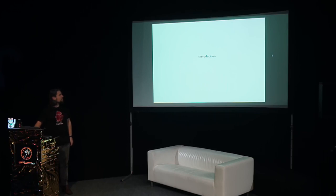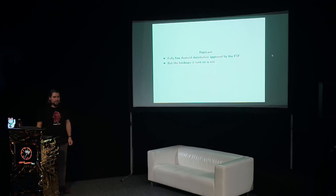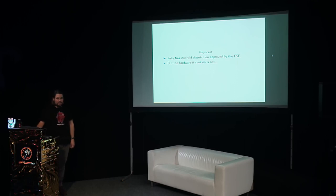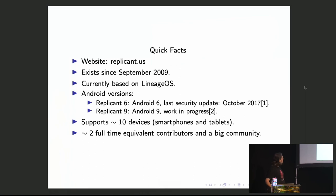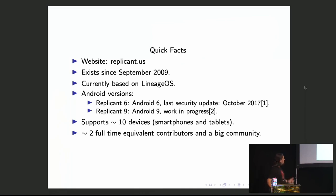First, a quick introduction on Replicant and smartphone architecture. Replicant is a fully free Android distribution approved by the FSF. However, the hardware has many freedom issues — software not part of Replicant, like the bootloader. We have a website, replicant.us, which exists since September 2009.